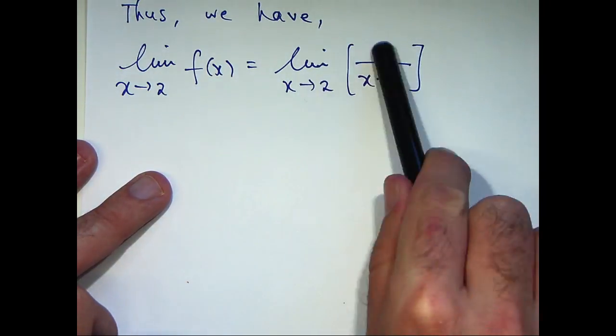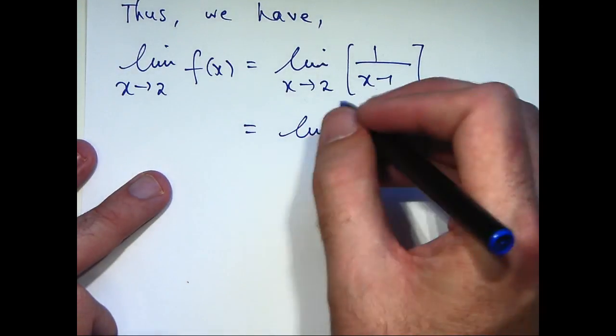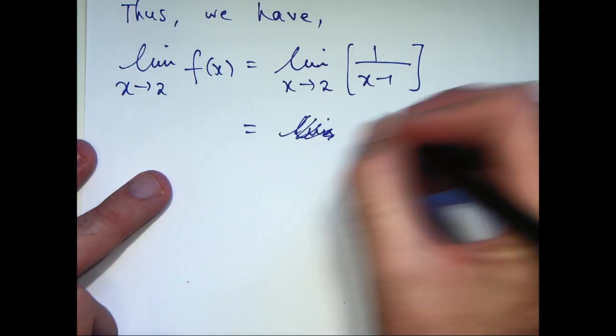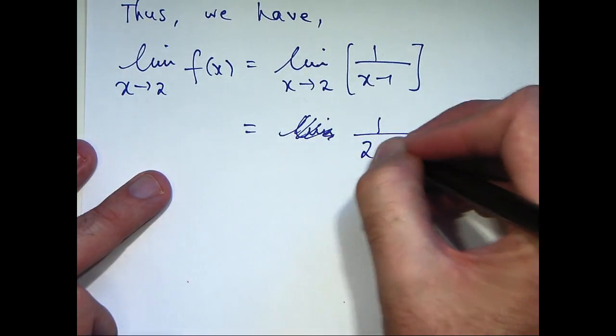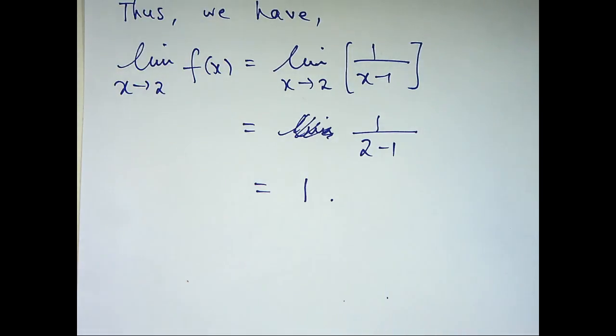Now I can take the limit of the top and the bottom just via simple limit laws. Actually, we don't need that. So 1 on 2 minus 1. So, I get 1 here.